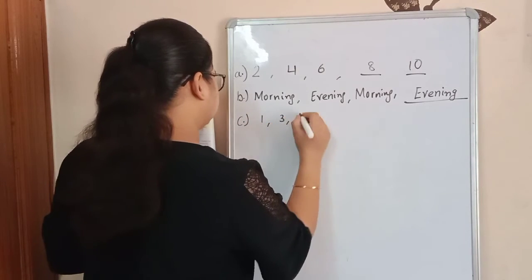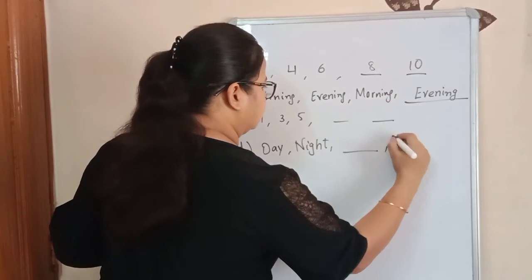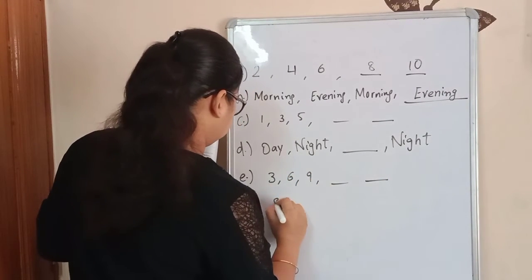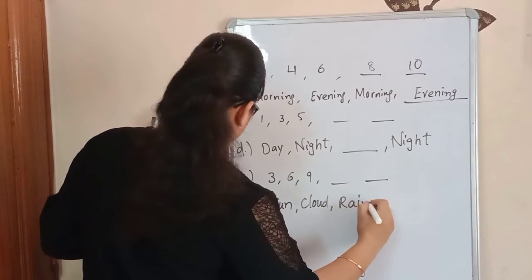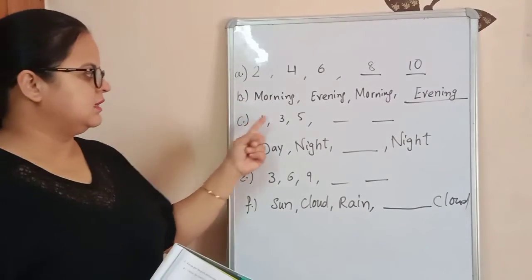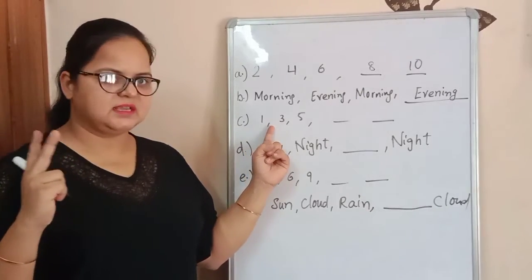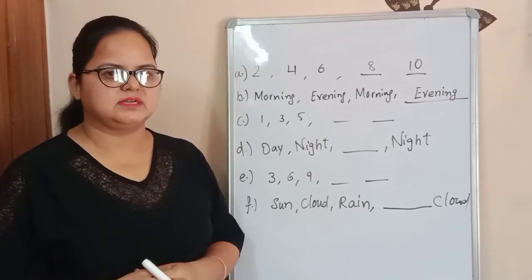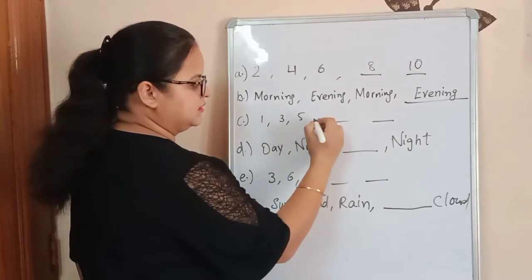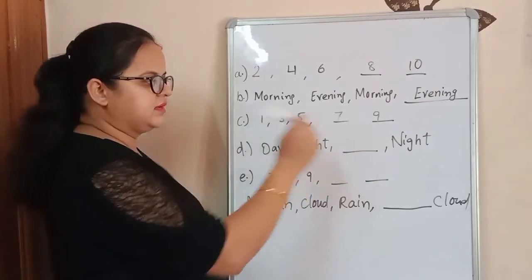The next one is one, three, five and two blanks. Next is, day, night, blank and then night. Three, six, nine and two blanks. Sun, cloud, rain. Here is blank given and here is written cloud. Okay. See, one, three, five. One, three and five. Again, you can see one, two is missing. The next number is three. Again, four is missed and five is written here. So we have to skip only one digit and write the next before, next after one. Here is five and then the next number is six. We will skip six and write seven here. Skip eight and write nine here. One, three, five, seven and nine.